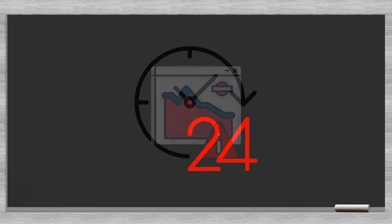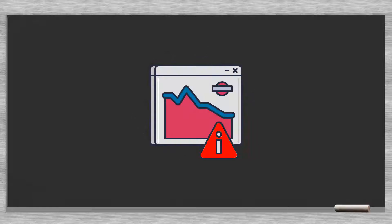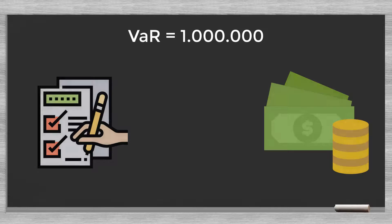The VAR shows the worst case scenario for the next 24 hours. It is the maximum amount the bank can lose when things go wrong on the financial markets — you could say it puts a ceiling on the losses. Say your value at risk equals 1 million; then you can check whether you have enough equity available to absorb such a loss.